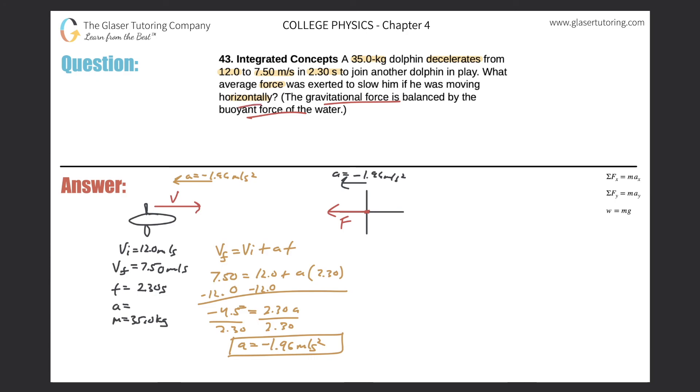Now I really have everything I need. The sum of the forces in the x direction should equal max. This is what I'm looking for: my F. The mass of the dolphin was 35.0 kilograms, my acceleration was negative 1.96 meters per second squared. So now my force should be negative, pointing to the left. 35 times negative 1.96, and we get negative 68.6.